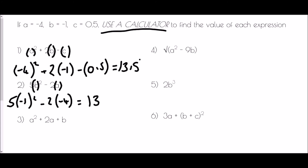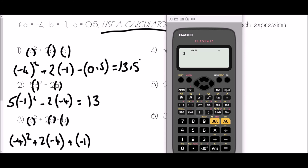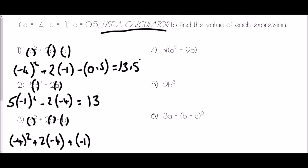For a squared plus 2a plus b, the same approach applies — keep putting brackets around the letters in the expression so the calculator knows exactly what to do. Substituting in our values and typing it in, that one comes out straight away at 7.